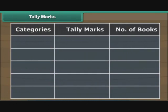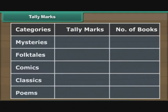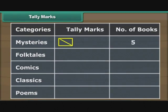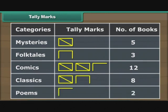Tally marks. Now, let us organize Ravi's data with the help of tally marks. Make three columns: categories, tally marks and number of books. Write down the five different categories under the categories column. Draw a vertical line against the mysteries category for the first book. Draw a horizontal line for the next book in the same category. Draw a vertical line for the third book and a horizontal line for the fourth book to complete the rectangle. Represent the fifth mystery book with a line drawn between two opposite ends of the rectangle. We repeat the exercise for other categories of books. The end result is a tally marks table.